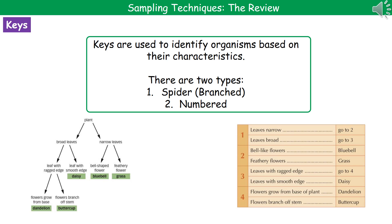So we've got a range of different techniques for collecting various organisms. But in order to actually understand what we've got, we need to be able to identify them. The way we do that is by using something called a key. What we do is look at the organisms we've collected, look at what characteristics they've got, and then using one of two types of key, we can identify them.